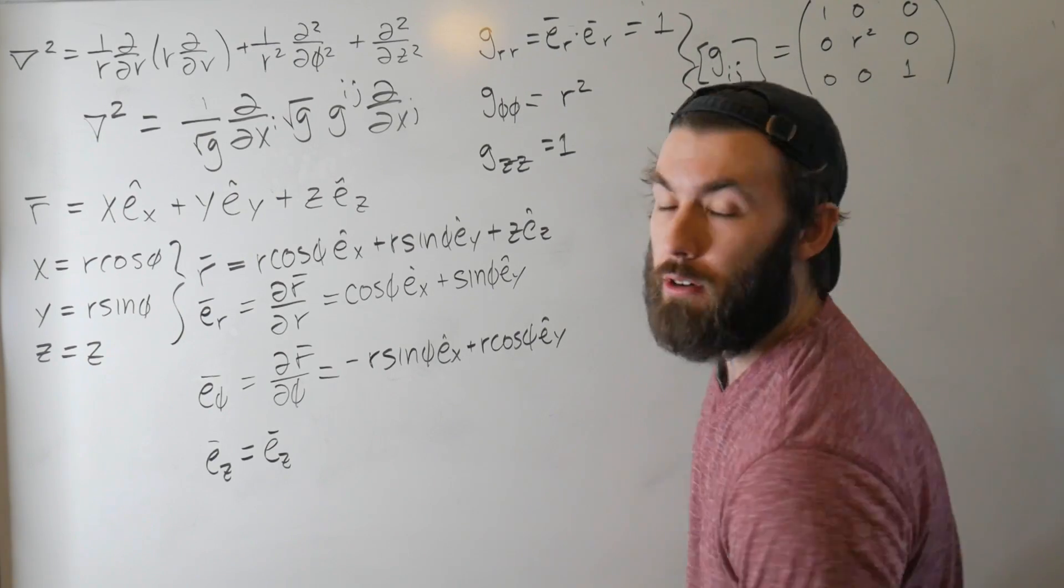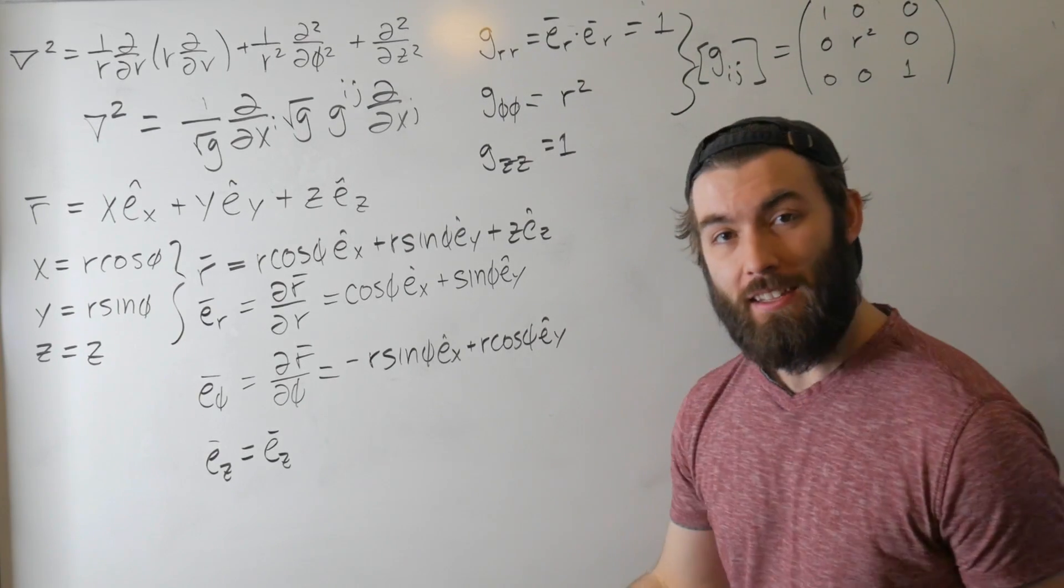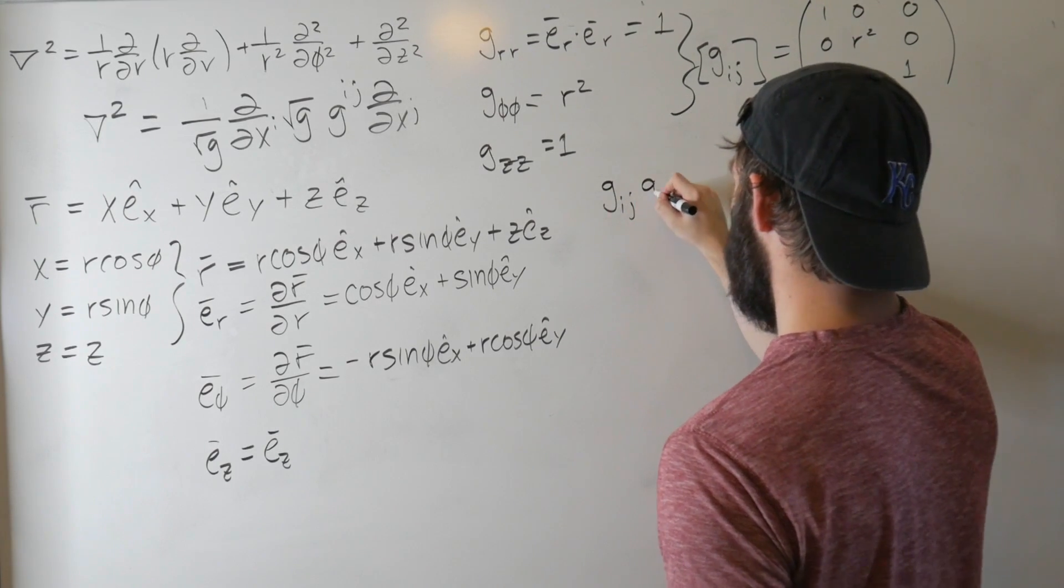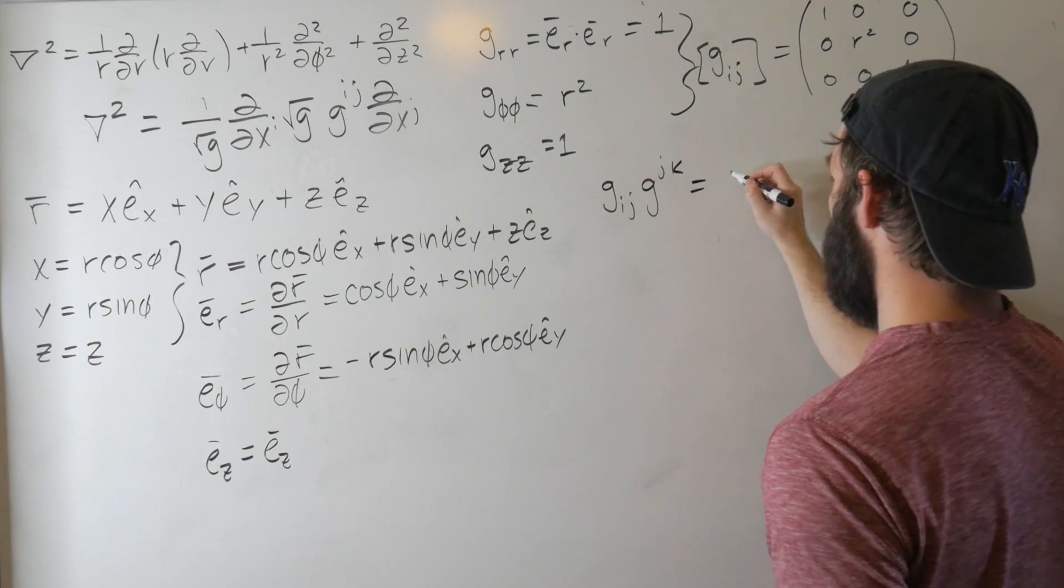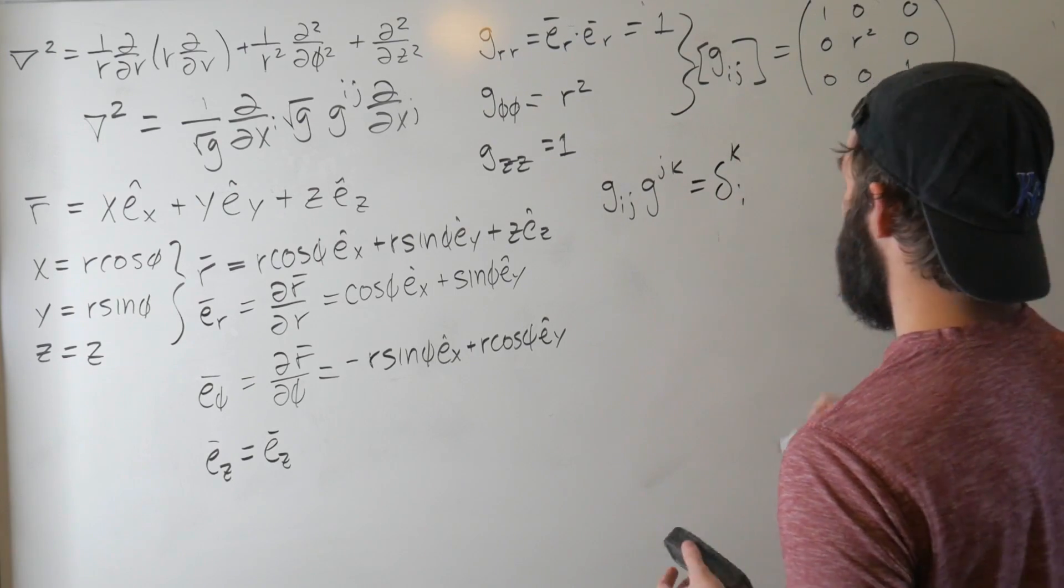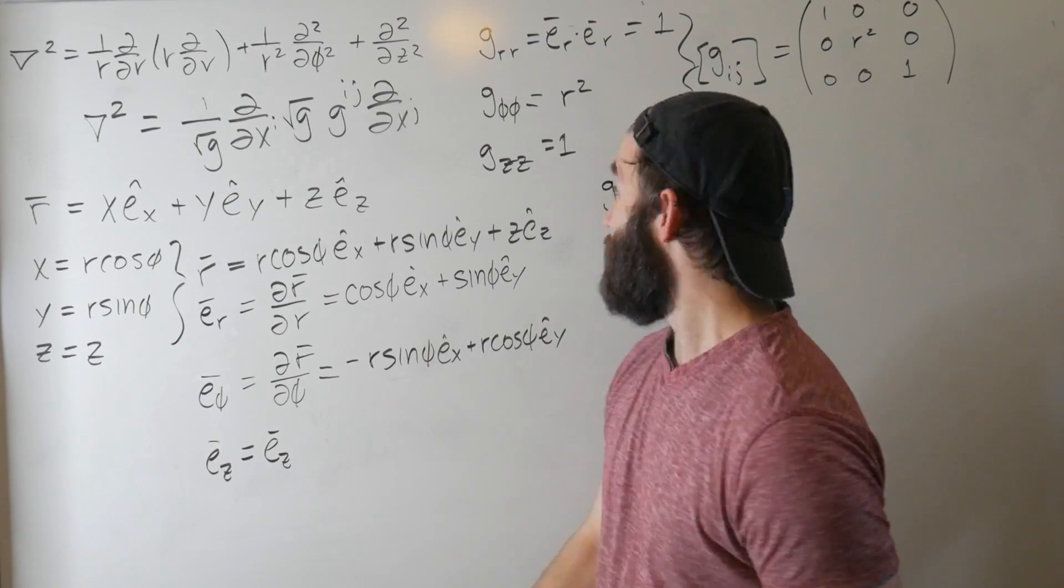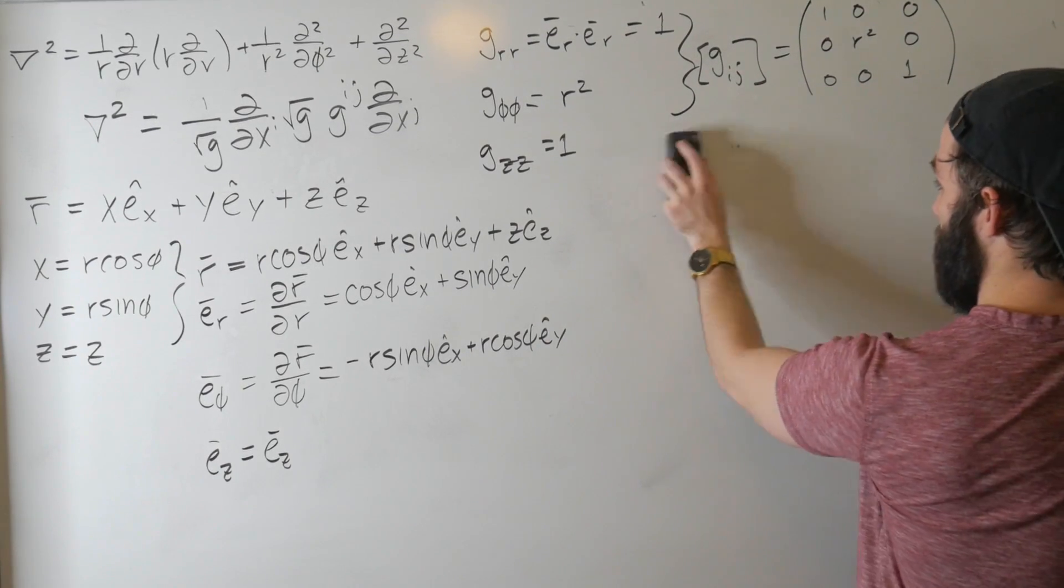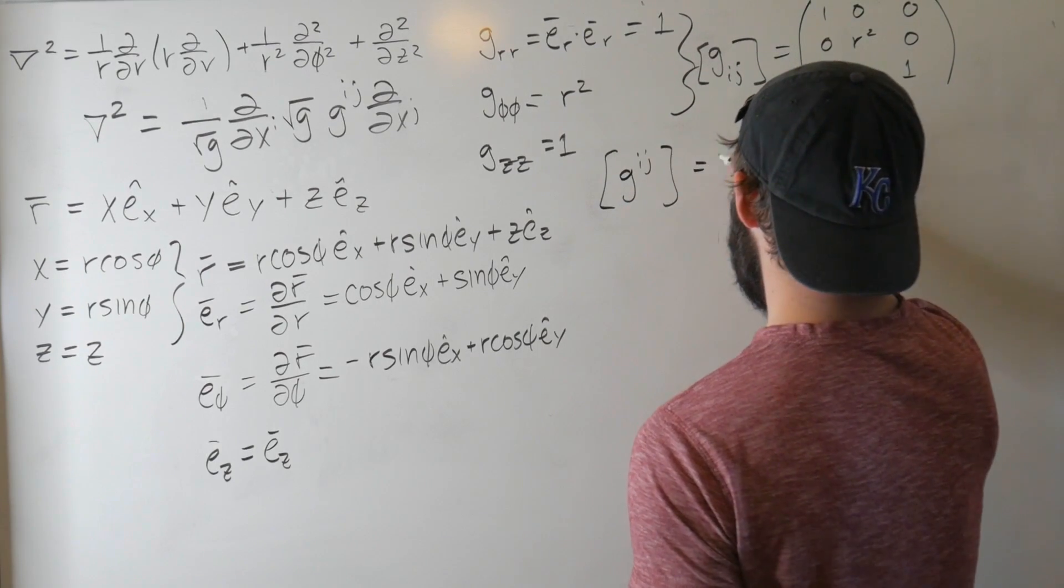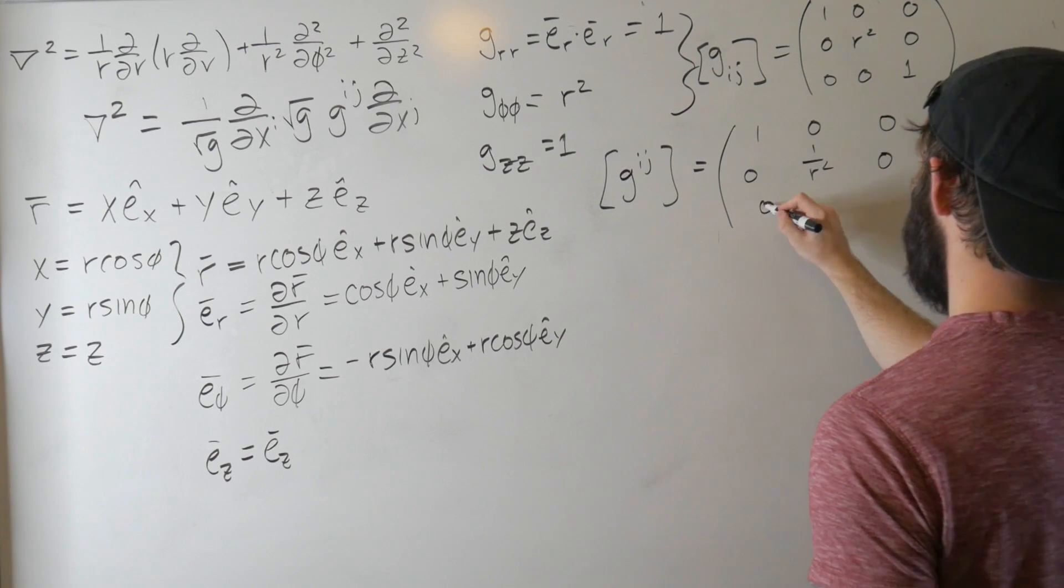Now, we don't want the downstairs, we don't want the covariant metric tensor. We need it to be contravariant, and the great thing about the metric tensor is that its inverse is the contravariant metric tensor. So if we do g_ij g^jk, this equals delta^i_k. So we just need to invert this matrix in order to get this g^ij. Since we have a diagonal matrix of this, this is extremely easy to invert. The inverse of this is just g^ij is [1, 0, 0; 0, 1/r², 0; 0, 0, 1].